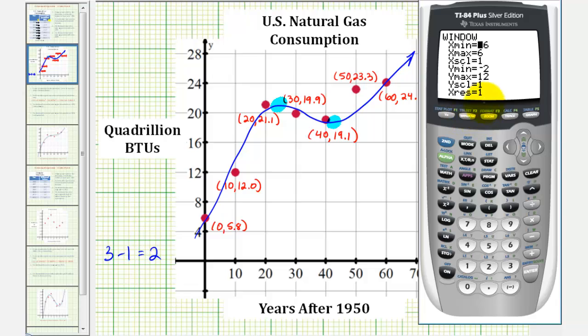So we're going to press window for the X values, which are really T values. We'll enter from negative 10 to 70. Going down to Y minimum, let's go from negative 4 to 30.